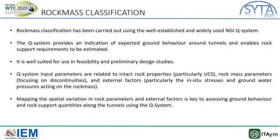The rock mass classification is done using the well-established NGI Q system, which is well suited for feasibility and preliminary design studies. It is related to intact rock properties and rock mass parameters, focusing on discontinuities — including the joint roughness number, joint alteration number, and joint water conditions — as well as intact rock parameters like UCS. Mapping the spatial variation in rock parameters and external factors is the key to assessing ground behavior and rock support quantities when using the Q system, which is essentially a holistic approach taking into account every aspect of the ground.